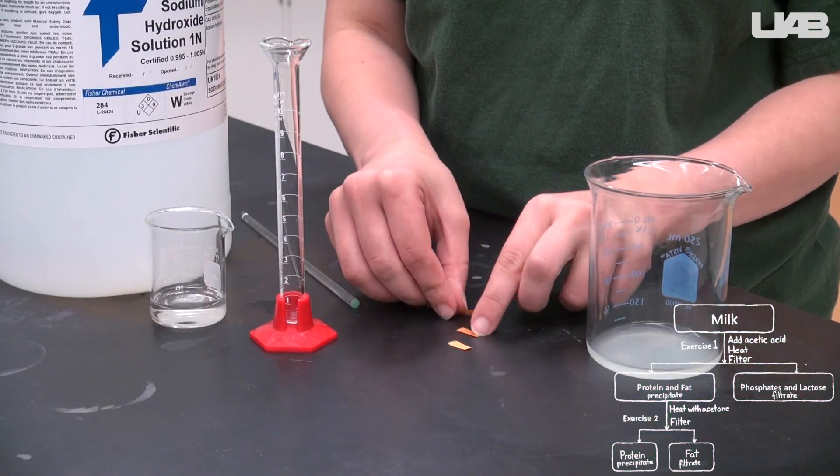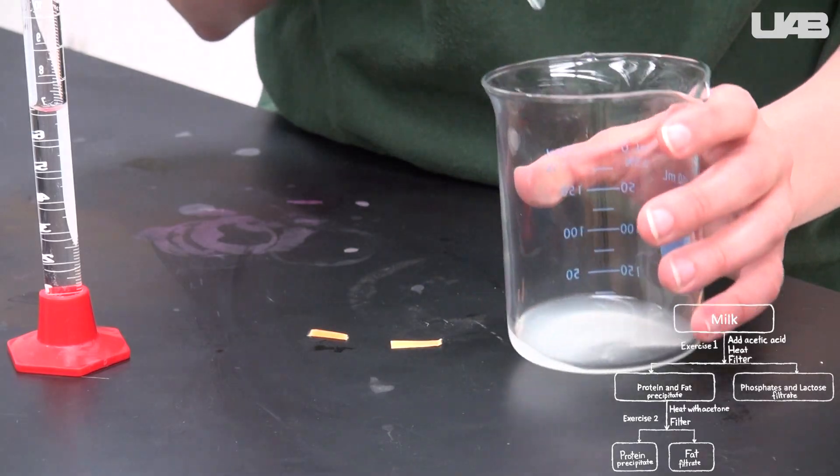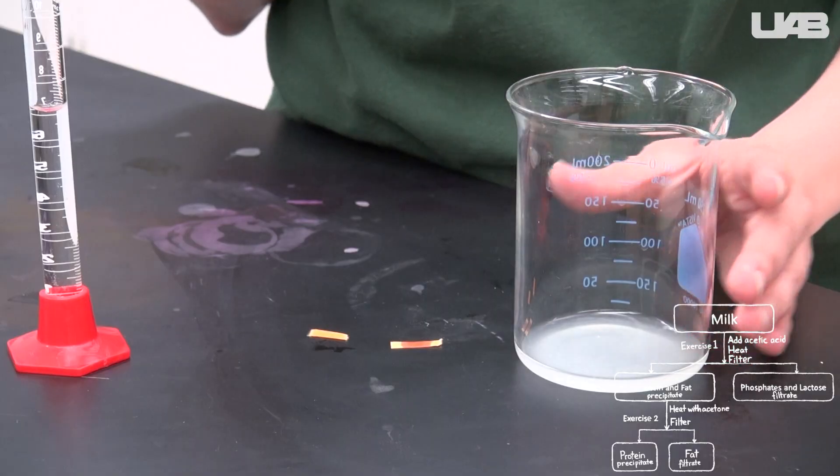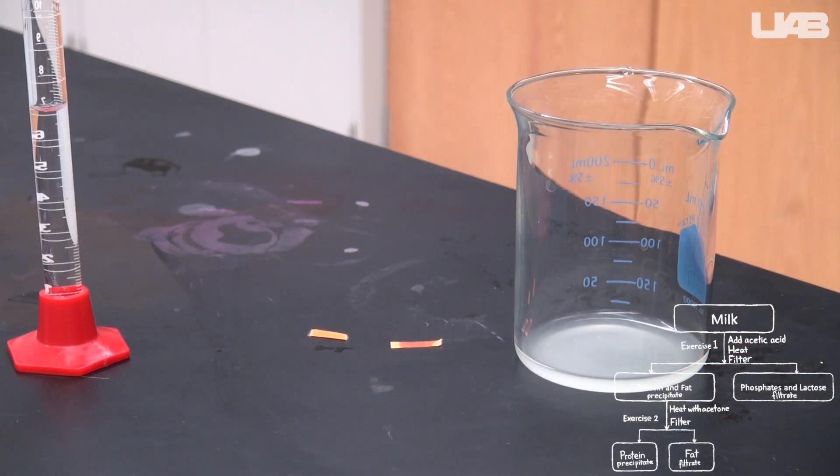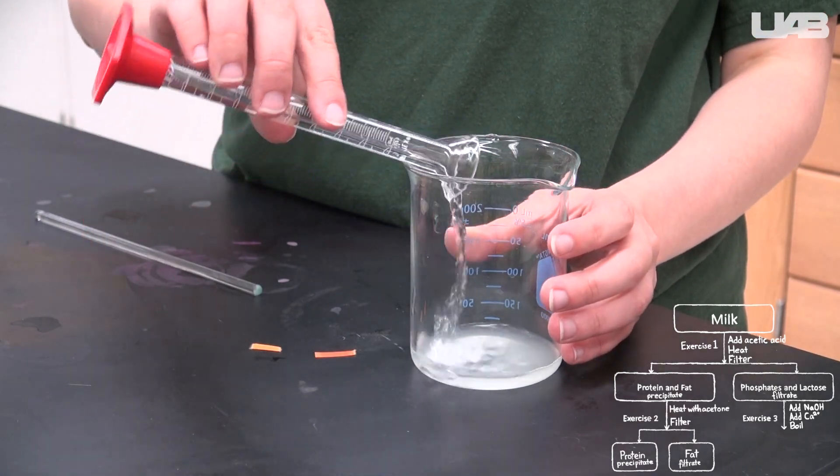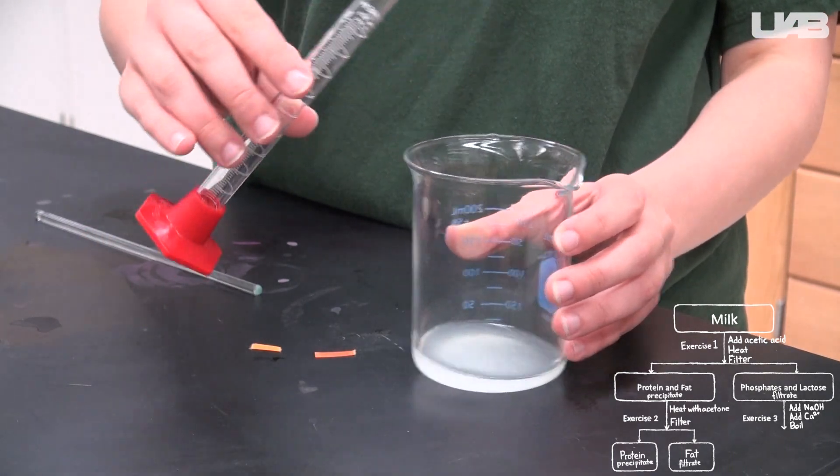Get some litmus paper and tear it into small pieces. The solution is currently acidic, which you can confirm by placing a drop of it on litmus paper. The paper will remain red. We want to turn it basic by adding a small portion, about 7 milliliters, of sodium hydroxide, a strong base.